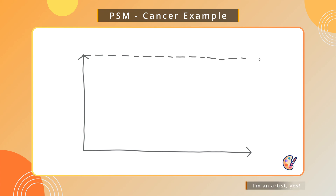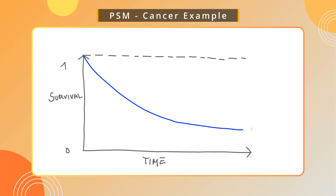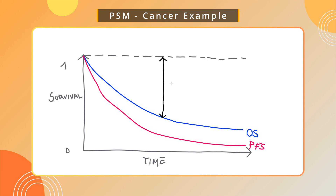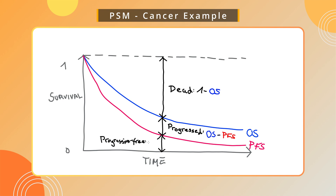As you can see from this example of a cancer treatment, a partition survival model allows you to use the overall and progression-free survival curves from the pivotal clinical trial to follow a theoretical cohort of patients through time as they move between a set of exhaustive and mutually exclusive health states. In our case, this results in three distinct health states, or buckets, whereby patients can either be progression-free, progressed, or dead. As every patient must be in one of these health states, the proportions of patients in all health states at any given time point should always add up to 100%. We can determine how many patients have died at any given time by subtracting the percentage of patients alive from the OS curve from 100%.